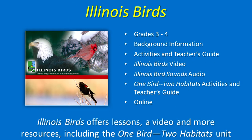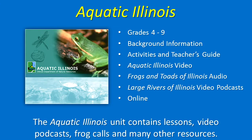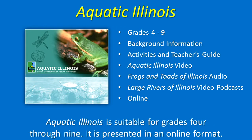Illinois Birds offers lessons, a video, and more resources, including the One Bird, Two Habitats Unit on Neotropical Migratory Birds. Available online only, this unit targets grades 3 and 4. The Aquatic Illinois unit contains lessons, video podcasts, frog calls, and many other resources. Aquatic Illinois is suitable for grades 4 through 9 and is presented in an online format.